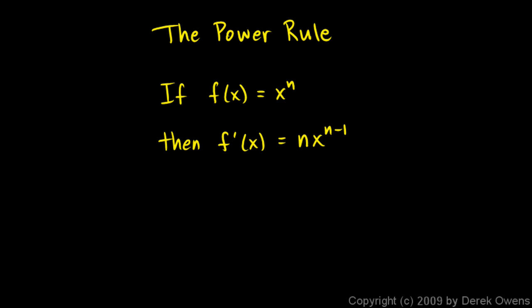We're talking about derivatives of power functions, and we just got through the power rule. If f of x is x to the n, and n could be any number, then the derivative of f of x is n times x to the power of n minus 1. This makes derivatives of functions in this form really quick and easy.